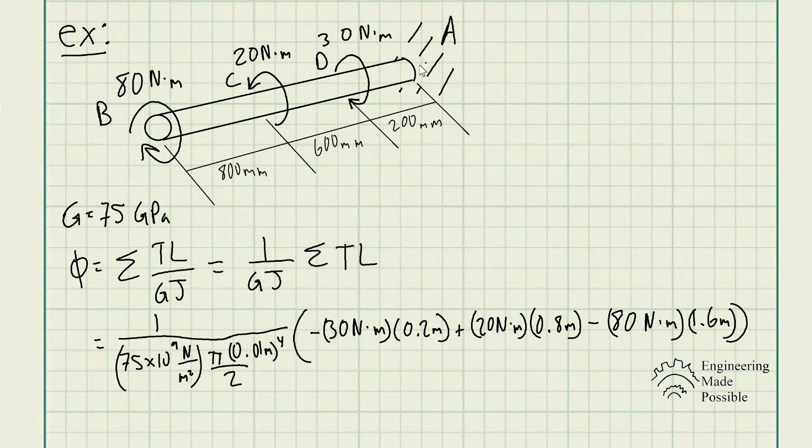And then we go ahead and do the sums of the torques times the length. So I went ahead and started from point D. In this case, since it's going clockwise, we stated that that sign convention is going to be negative. So negative 30 Nm times 0.2 meters, which is the length from the fixed point at A to D.